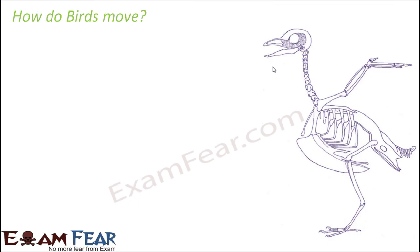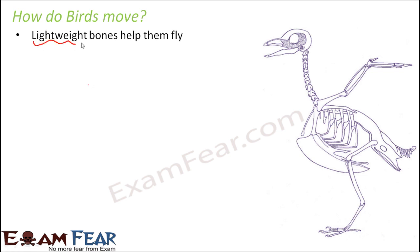When you look at the rough skeleton of a bird, this is how it looks like. One major factor that allows birds to fly is their lightweight bones. When you look at the skeleton of a bird, they do have bones, but they have a lesser number of bones compared to other organisms.